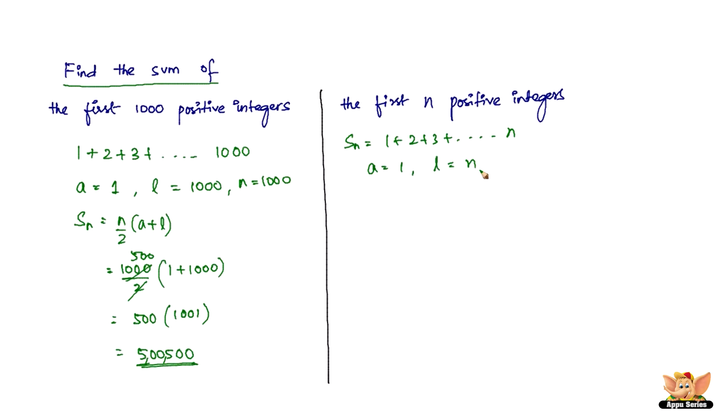We have Sn equals n by 2 times a plus l. So here we have n by 2, and the l is also n. So we have a is 1 and l is again n, so what we have is n into 1 plus n divided by 2, which is n squared plus n divided by 2.